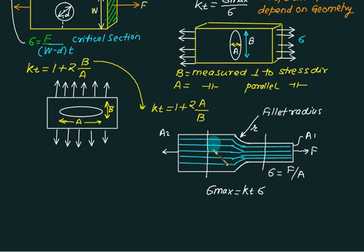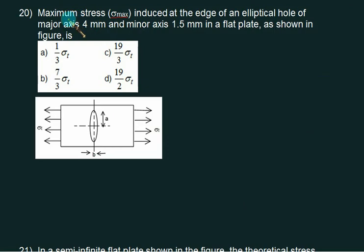They will ask you the problem based on this one. They will provide the value of KT. Maximum stress sigma max induced at the edge of an elliptical hole. This elliptical hole is given to you. Of major axis equal to 4. Major axis is whole value, that is 4. And minor axis is 1.5. That is this one is minor 1.5. And you have to find out that sigma T is the theoretical value. You have to multiply this value by KT. So what is KT first?